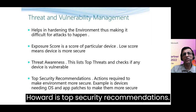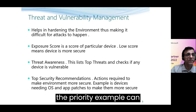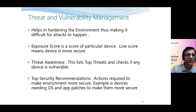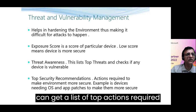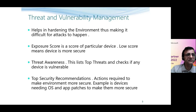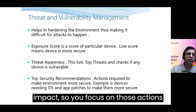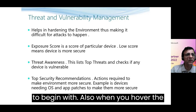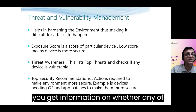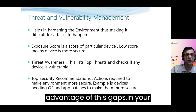Third is top security recommendations, which gives recommendations as per priority. Examples can be top patches for operating systems and apps that are needed. You click on 'improve score' and get a list of top actions required to improve the score. The actions can also tell you what action will give maximum impact, so you focus on those first. Also, when you hover the mouse pointer over the threats column, you get information on whether any threats can take advantage of gaps in your environment.